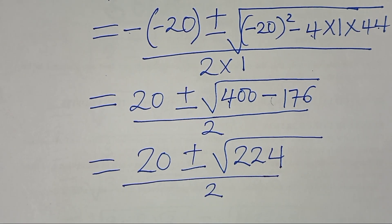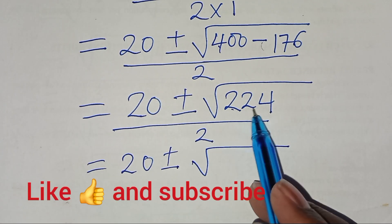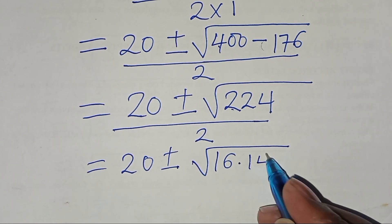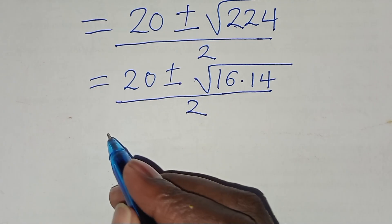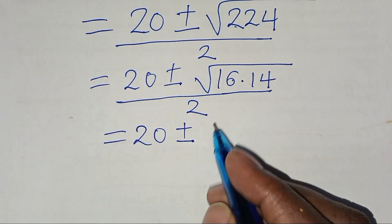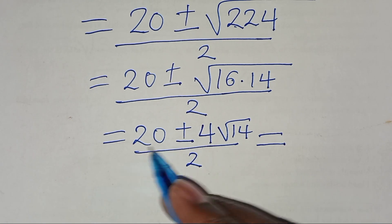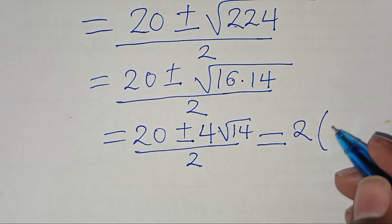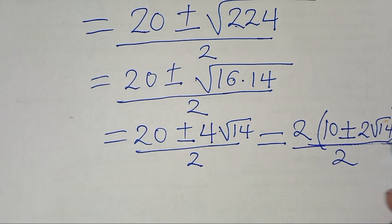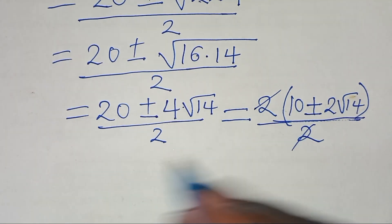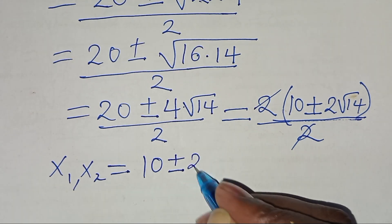So we have 20 plus or minus the square root of 224, divided by 2. We can express 224 as 16 times 14, so the square root of 224 is 4 times the square root of 14. Factoring out 2 from the numerator, we get 2 times (10 plus or minus 2 root 14), divided by 2. Simplifying, x₁, x₂ equals 10 plus or minus 2 root 14.